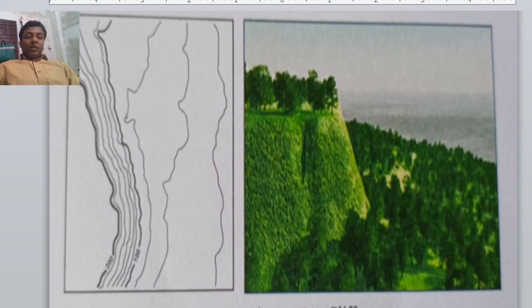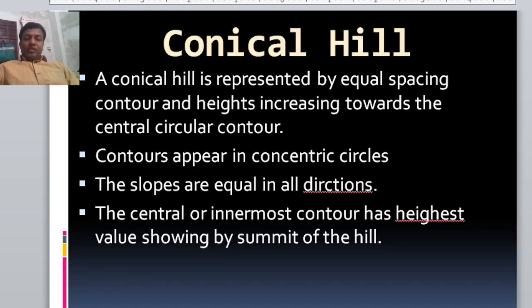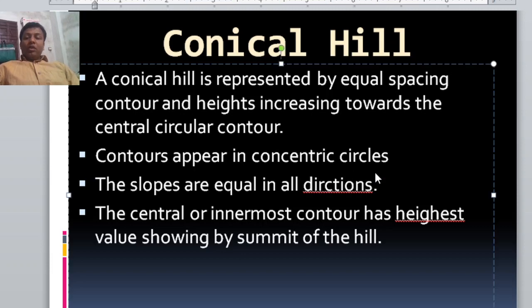Now we are going to discuss conical hills. As you know that a conical hill is represented by equal spacing contours and heights increasing towards the central circular contours. Contours appear in concentric circles and the slopes are equal in all directions.